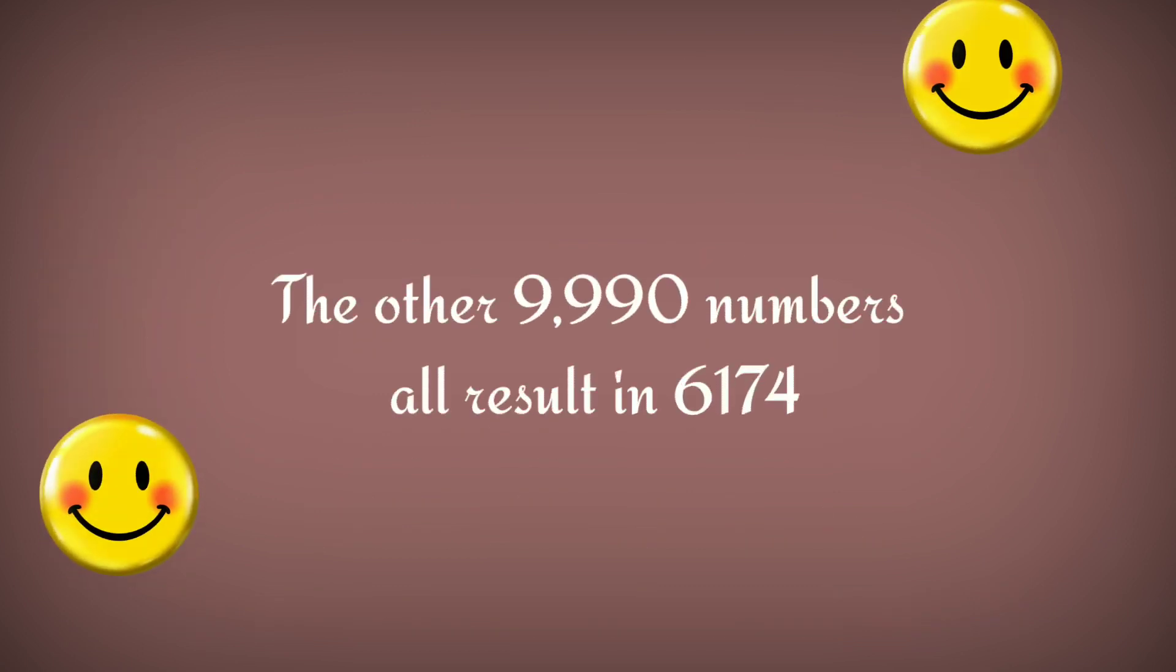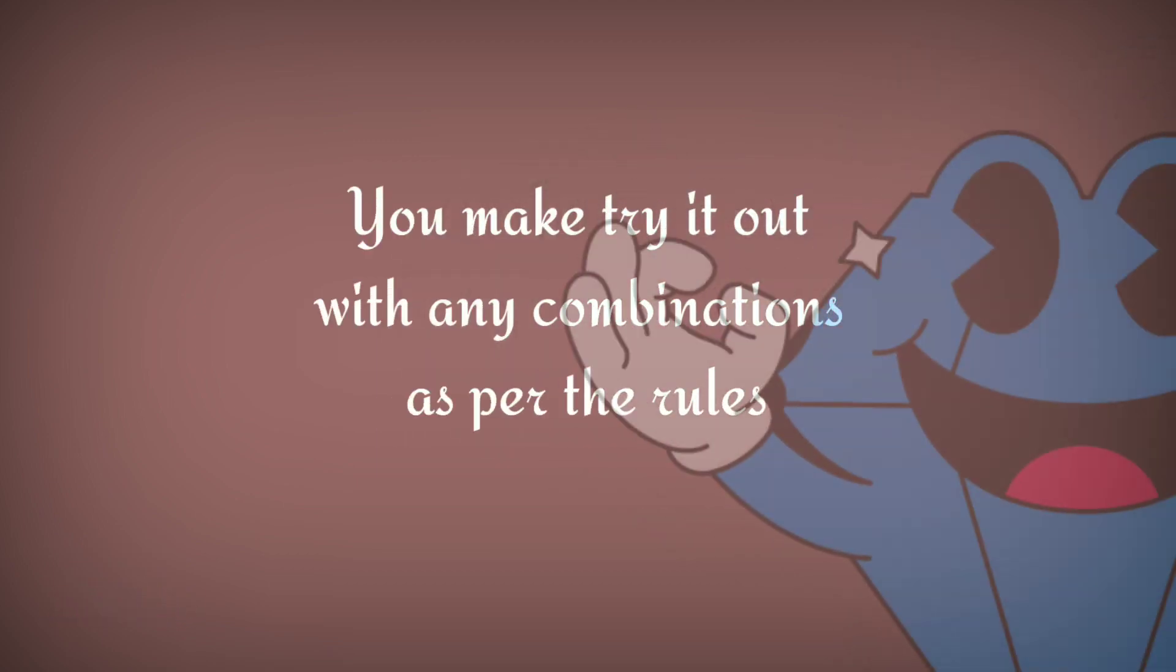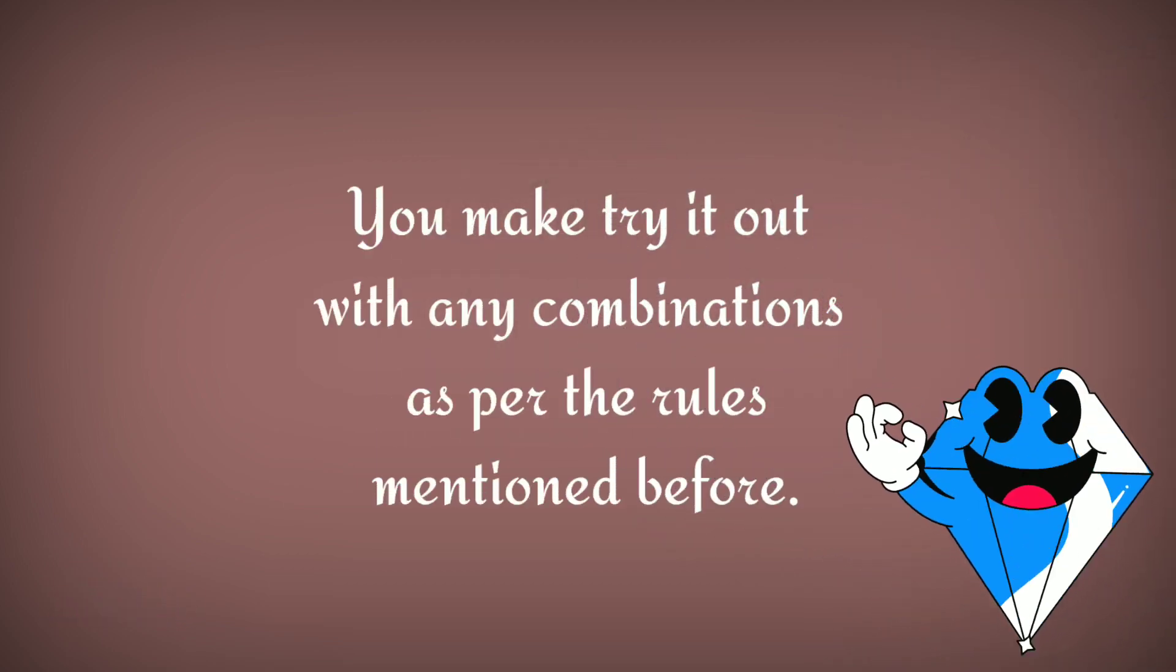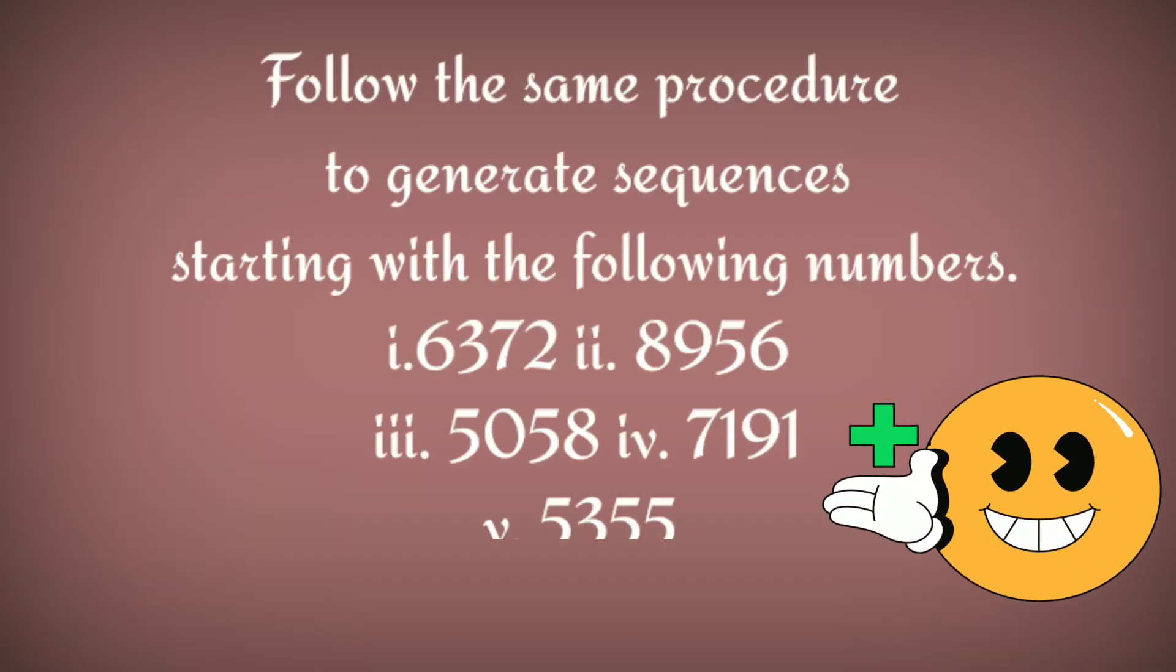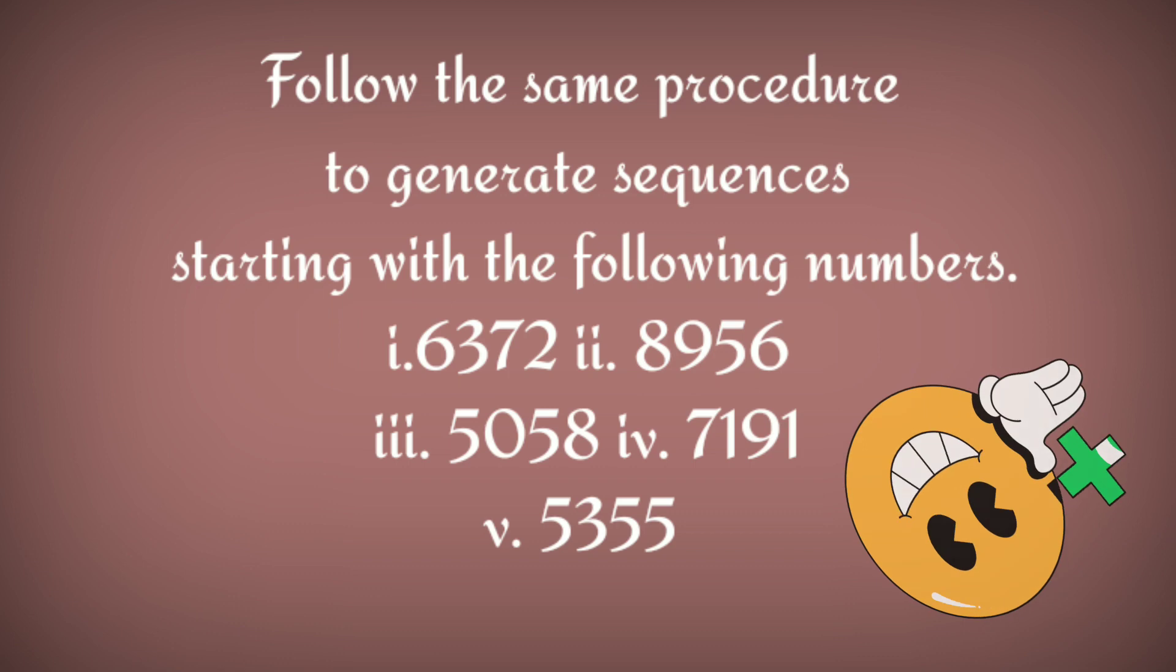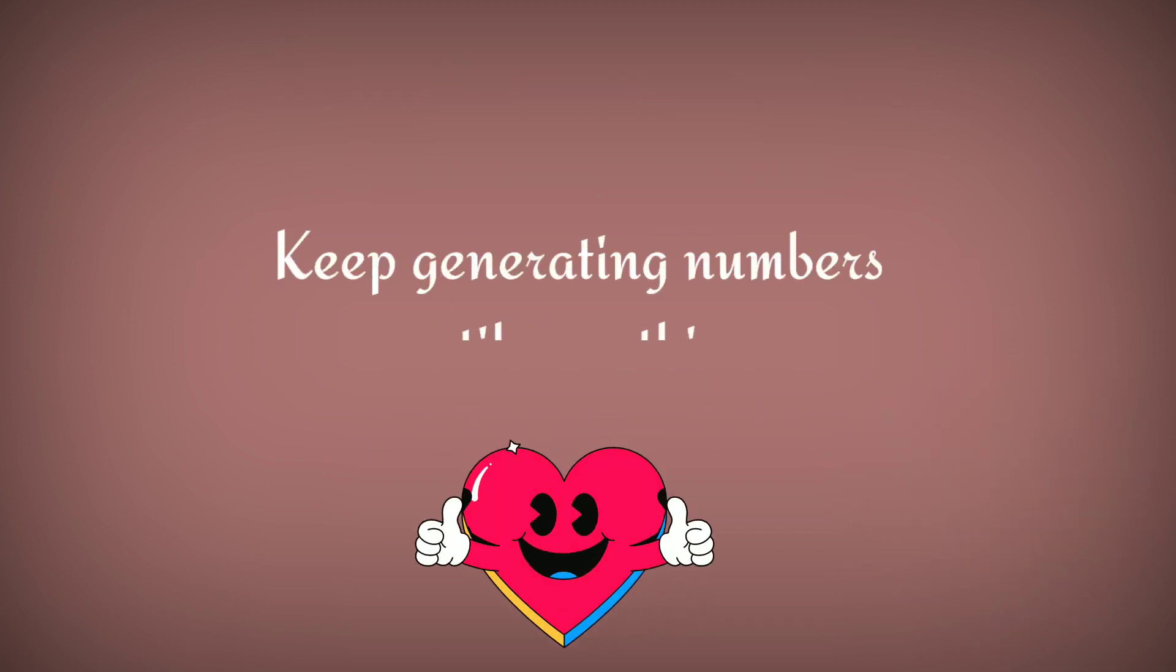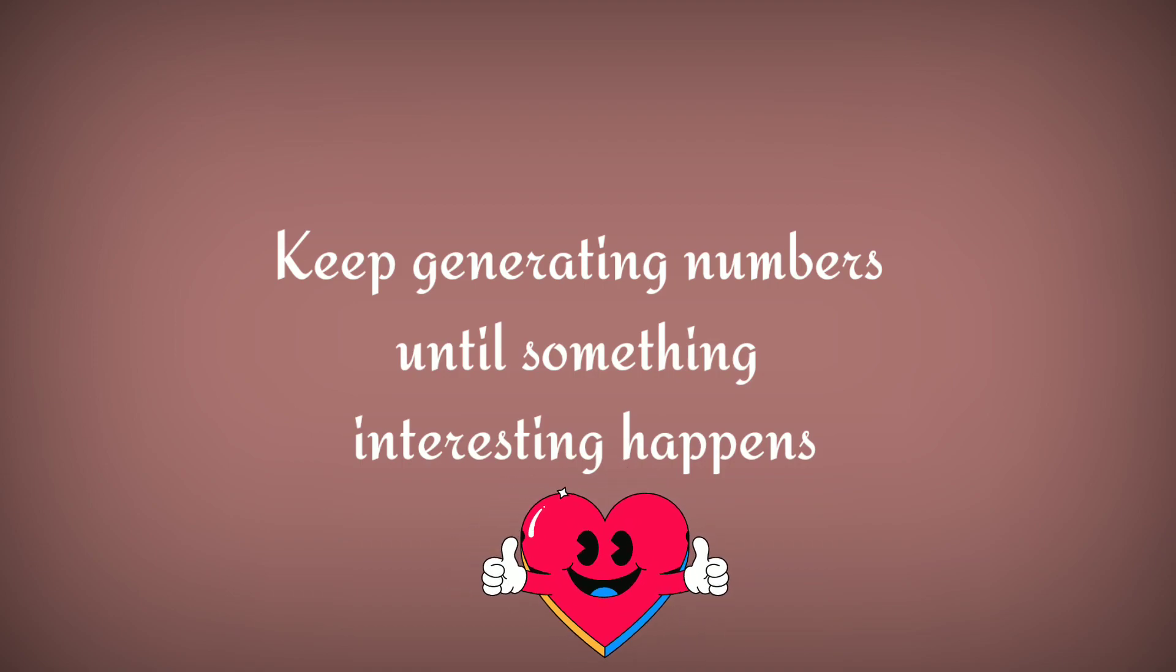The other 9,990 numbers all result in 6174. You may try it out with any combination as per the rules mentioned before. So why wait? Try with your numbers and check if 6174 is coming or not. So keep generating numbers until something interesting happens.